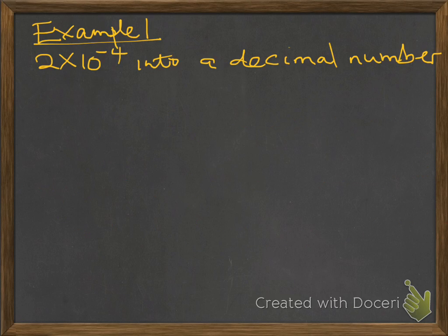Let's look at the first example. It's given that 2 times 10 to the power minus 4 into a decimal number. How can we convert this?